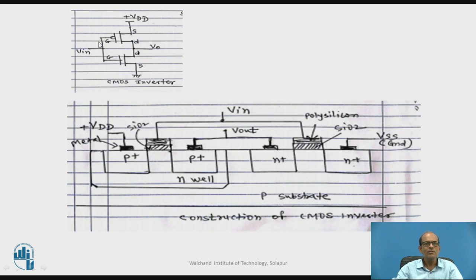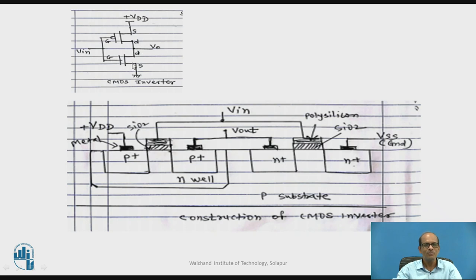This is the circuit for a CMOS Inverter. The drains of the two MOSFETs are connected together, which forms the output. The source of the P-MOSFET is connected to VDD, and the source of the N-MOSFET is connected to ground. The gates of the P-MOS and N-MOS are connected together where the input is applied.